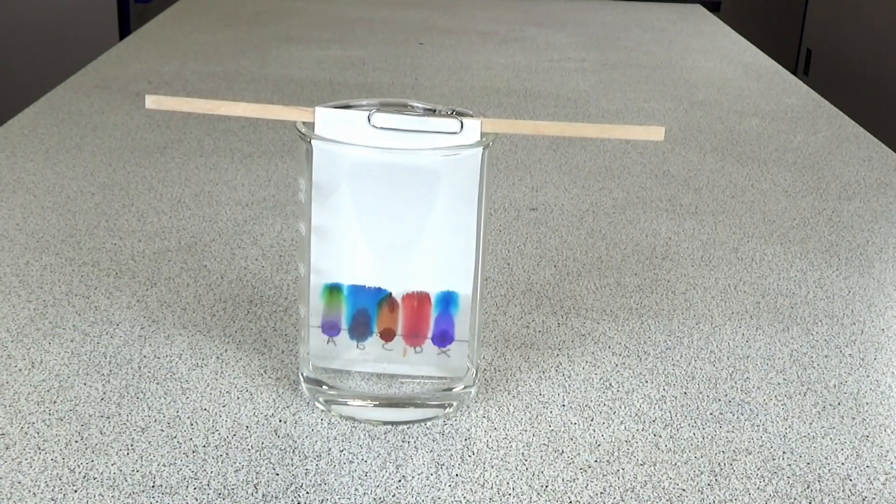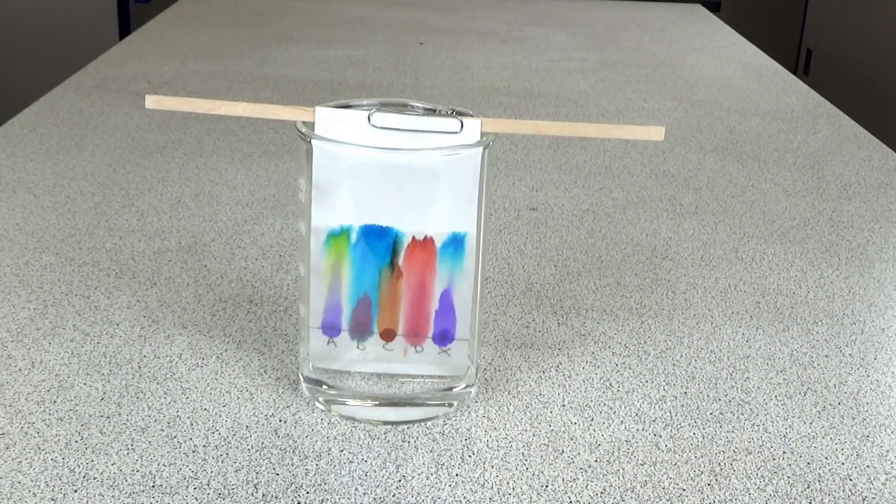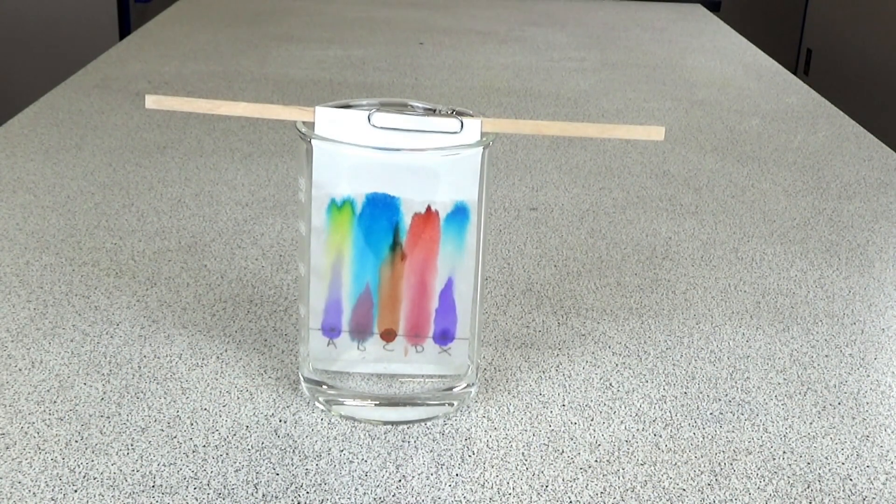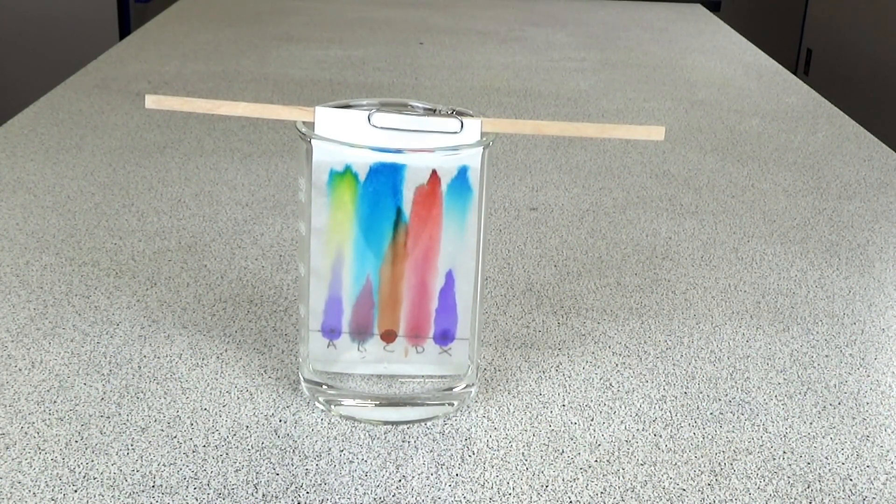Students watch as the water moves up the chromatography paper until it reaches near the top of the paper. Students should see the food dyes moving up the paper and the mixture on spot X should start to separate.